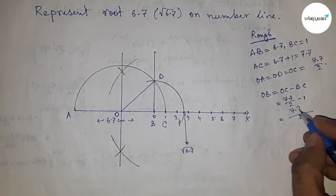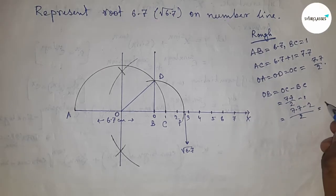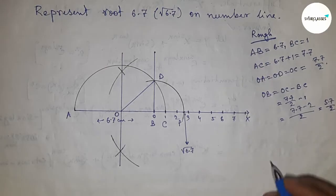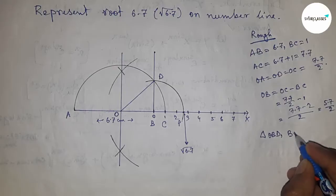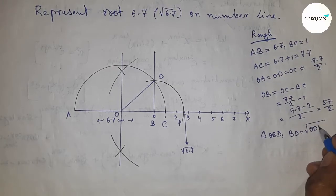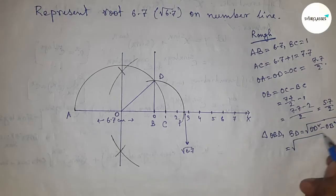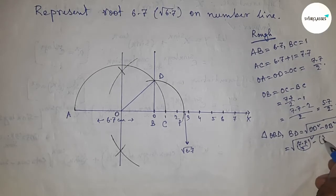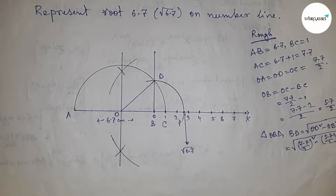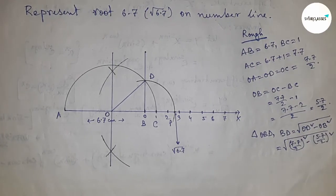In right triangle OBD, by Pythagorean theorem, BD equals the square root of hypotenuse squared minus base squared. Putting the values and applying the formula a squared minus b squared equals (a plus b)(a minus b), we can solve this to get root 6.7.